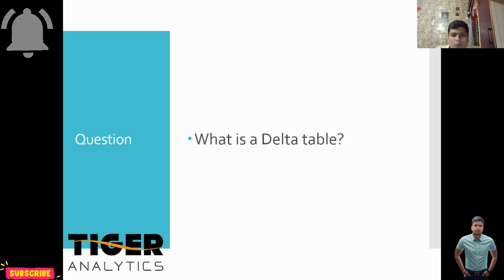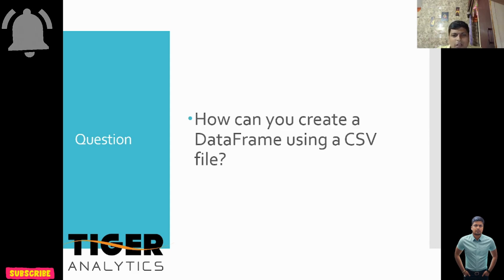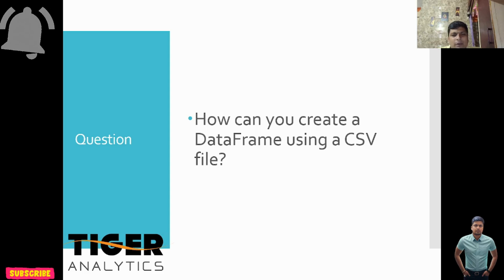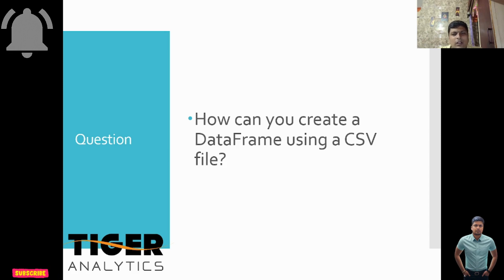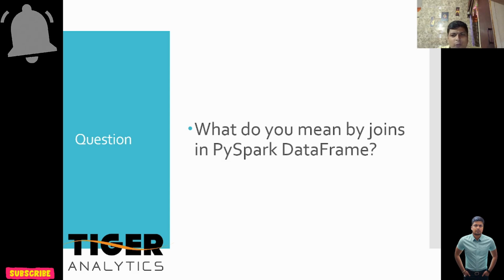What is a Delta table? — that was another question asked. Then: how can you create a DataFrame using a CSV file? If a CSV file is stored at some location, you create a Spark session, import necessary libraries, and write: spark.read.format('csv').option('header', True).load(path). This way you can create a DataFrame on top of the CSV file.